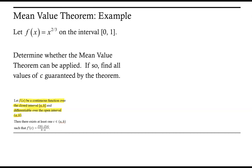So the conclusion of the mean value theorem tells us that there is at least one value c between 0 and 1 such that the slope of the tangent line is equal to the slope of the secant line connecting the two endpoints — or equivalently, equal to the average rate of change over that interval.